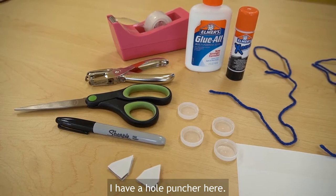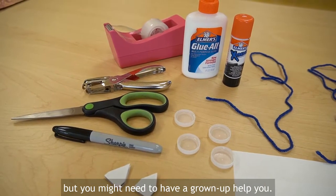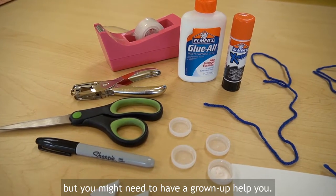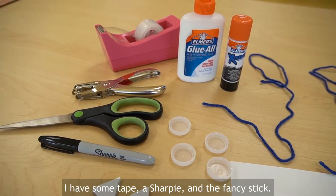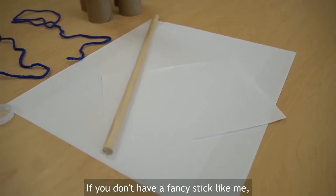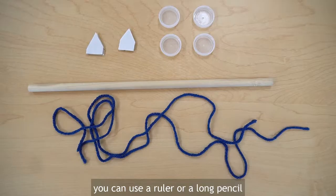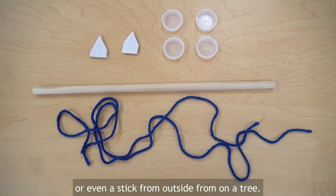I have a hole puncher here but if you don't have that scissors will do but you might need to have a grown-up help you. I have some tape, a sharpie and a fancy stick but if you don't have a fancy stick like me you can use a ruler or a long pencil or even a stick from outside from a tree.